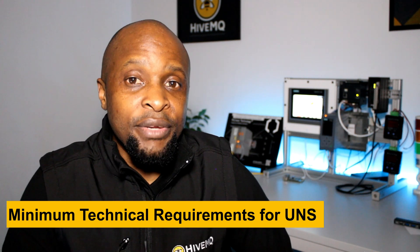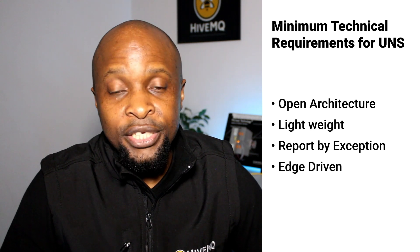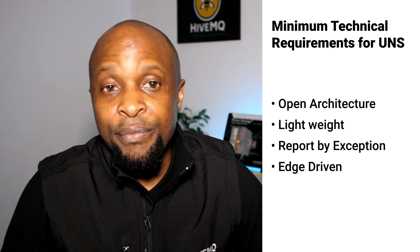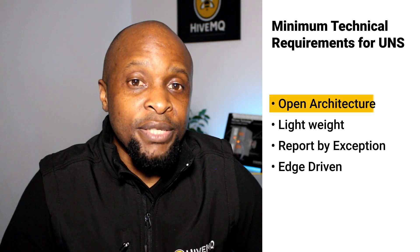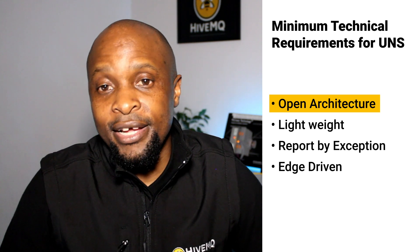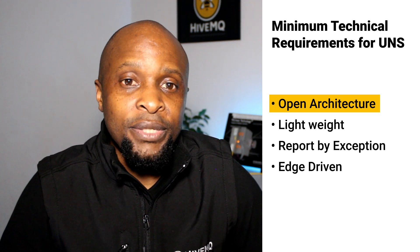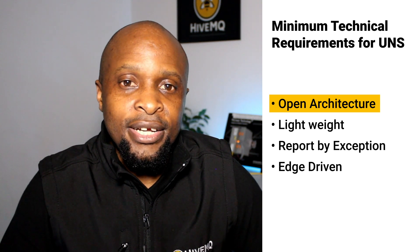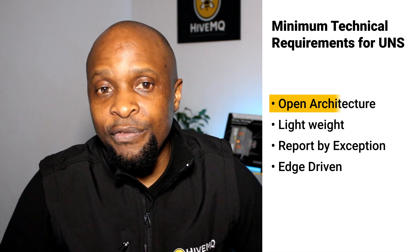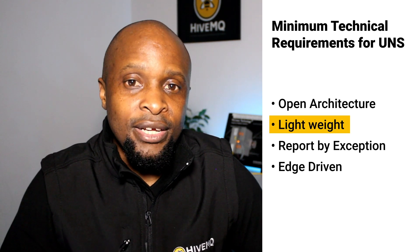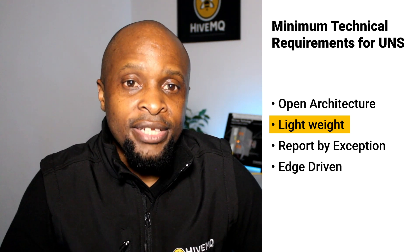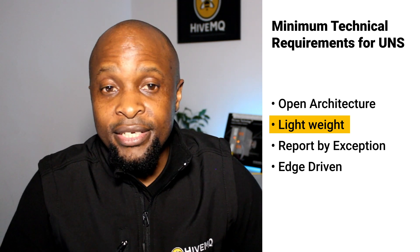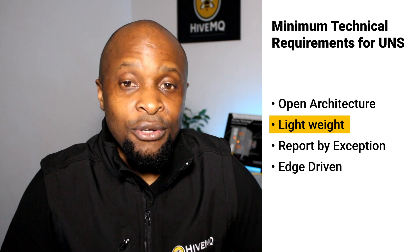Due to these characteristics, MQTT and Sparkplug B meet the minimum technical requirements for a UNS implementation, which are: open architecture, edge-driven, lightweight, and report by exception. MQTT and Sparkplug B specifications are publicly available for implementation — many organizations have adopted these specifications, making it easy to swap or add components from different IoT vendors into the UNS data ecosystem. The creators of MQTT originally built it to monitor oil pipelines over satellite, so they designed it to have minimum overhead to fulfill bandwidth-efficient and reliability requirements. Additionally, MQTT uses a binary protocol, significantly reducing the communication overhead.